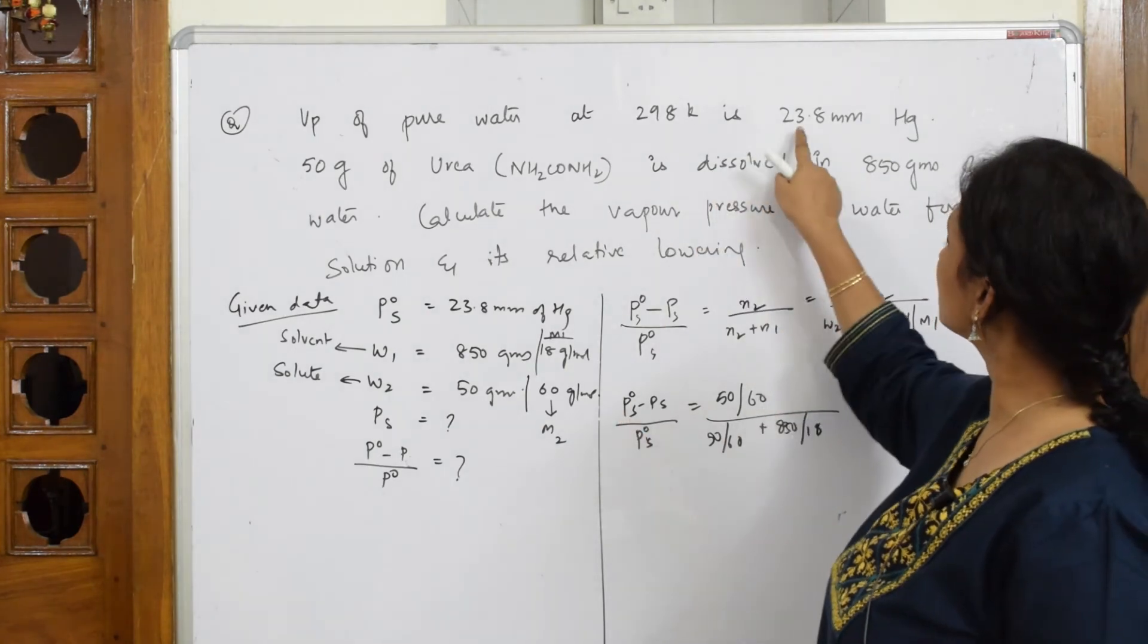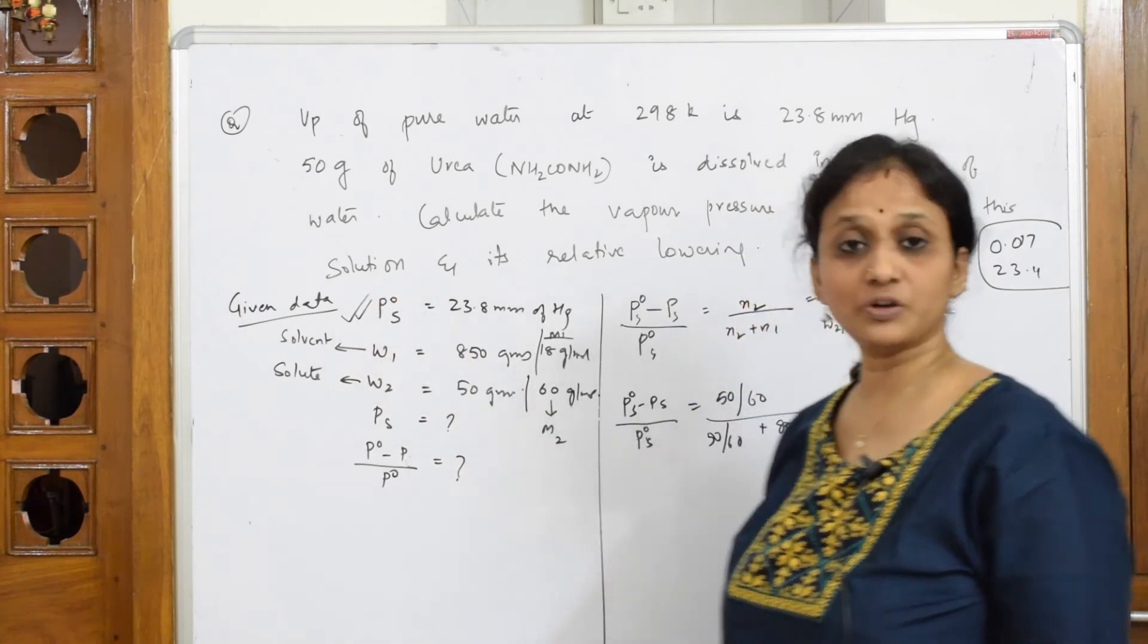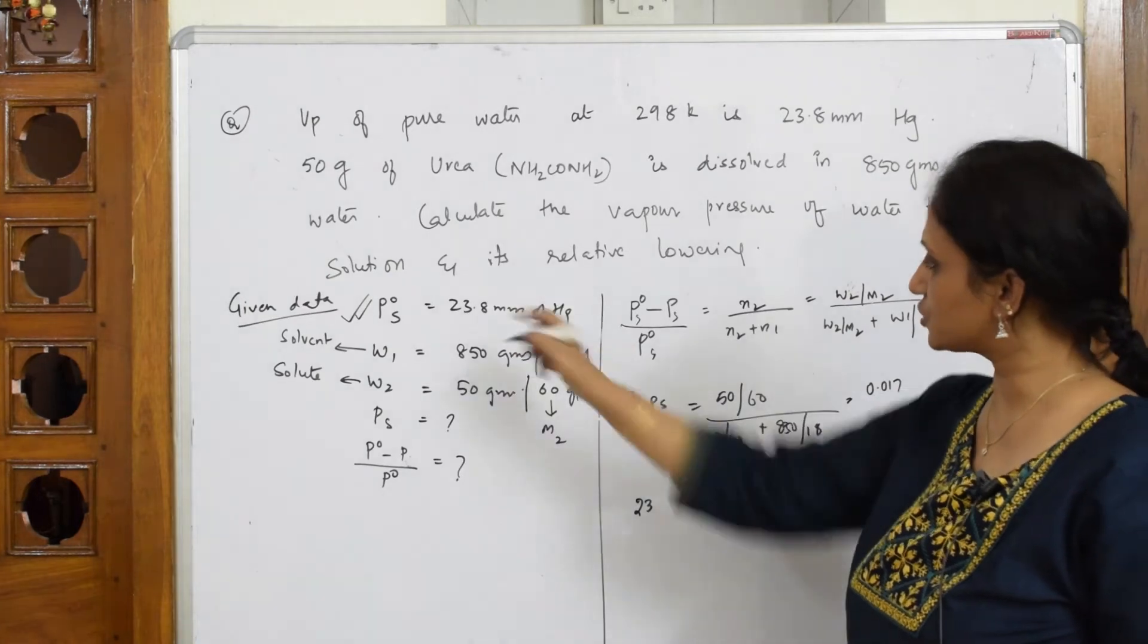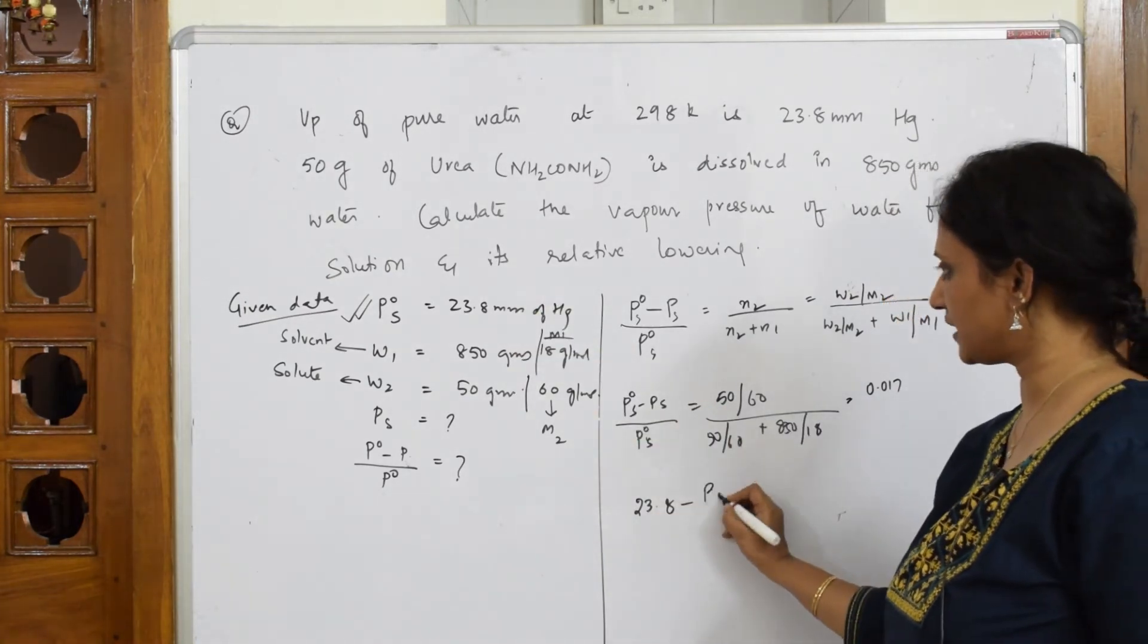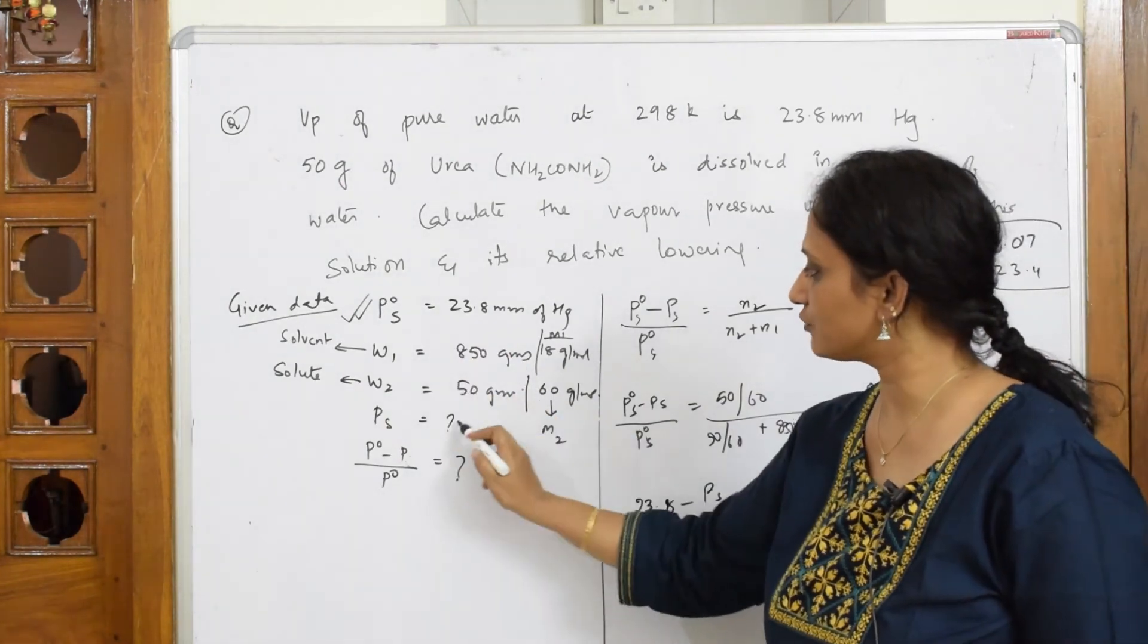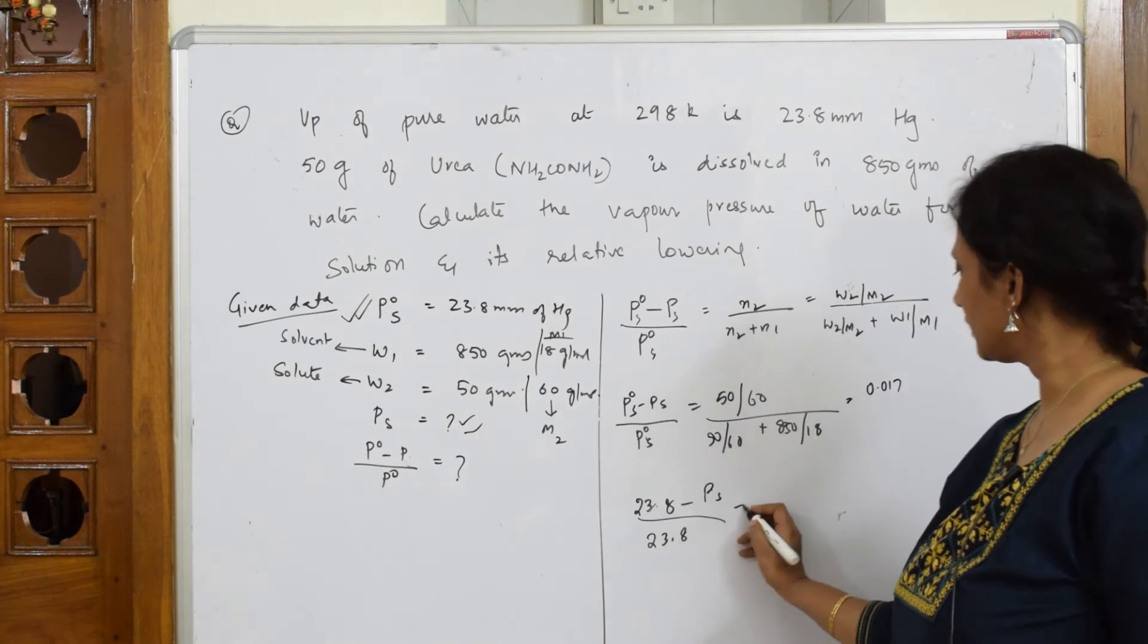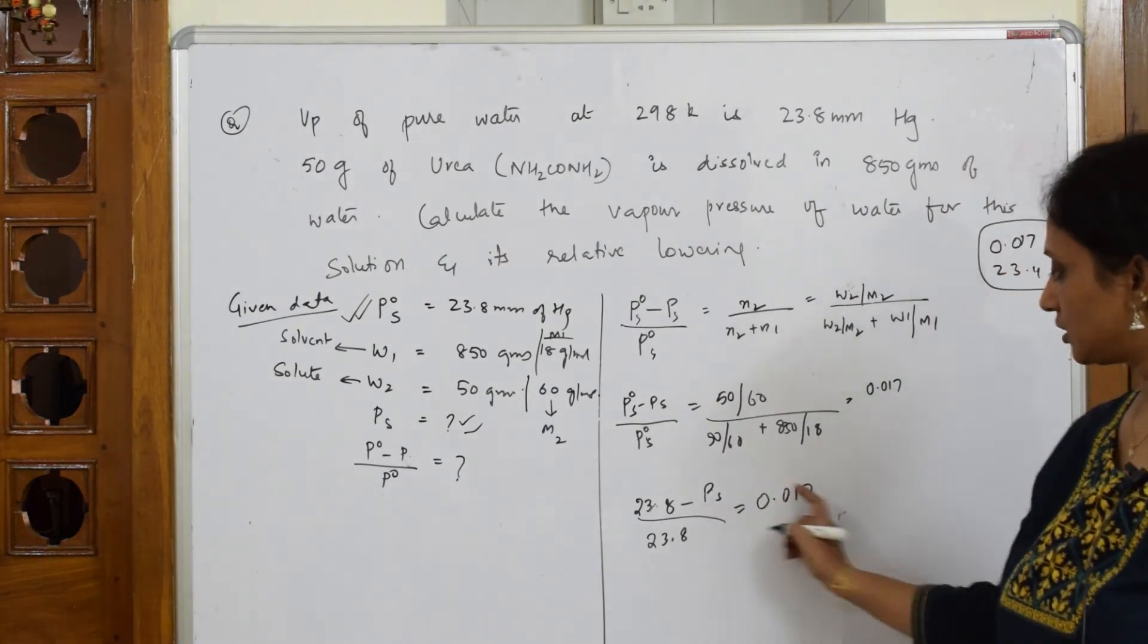Let's take this now. What did they give us? They've given one quantity here - what is it? P naught s. They've given us vapor pressure of pure solvent, and I substitute that value here. Because I have to find PS, I'm taking this value which is already given: 23.8 minus your PS - I have to find because I've already written here I have to find PS - divided by 23.8, which is equal to 0.017. Cross multiply.